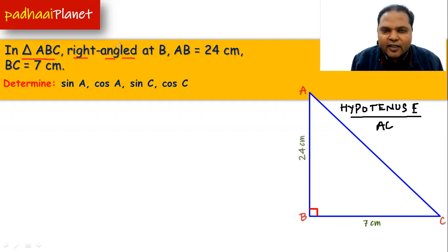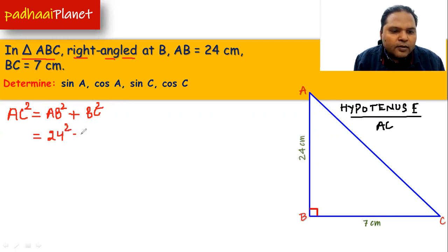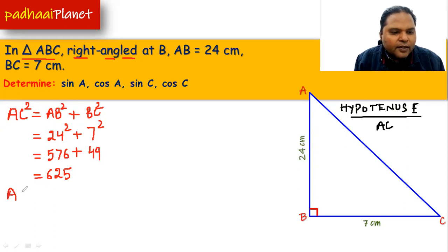It is given that it is a right angle triangle and therefore we can use Pythagoras theorem. As per Pythagoras theorem, the square of the hypotenuse, that is AC², is equal to AB² plus BC². Now let's put the values of AB and BC here. So we have 24² plus 7², that's 576 plus 49, and that makes it 625.